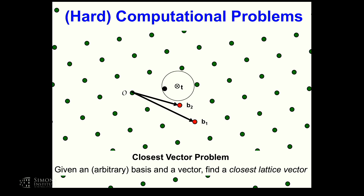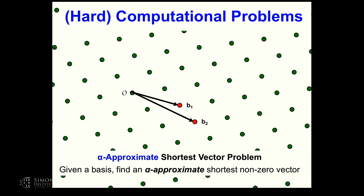That's another one of these hard problems. What do I mean by hard? I mean that we don't have polynomial time algorithms for it. In fact, we don't even have good polynomial time algorithms to approximate the answer. So we have the notion of an alpha approximation for shortest vector: given the basis, find an alpha approximate shortest nonzero vector, where the difference is an alpha factor away. We can do the same for the closest vector problem.